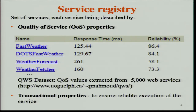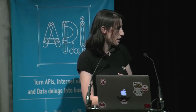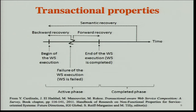Transactional properties concern mechanisms offered by the service providers to ensure a reliable execution of the service. A service execution has a beginning and an end. If a failure occurs during service execution and the provider offers a mechanism to cancel or roll back the effects done by the service from its beginning until the failure, we call it backward recovery. If the provider offers a mechanism to repair the failure and continue the execution of the service, we call it forward recovery.